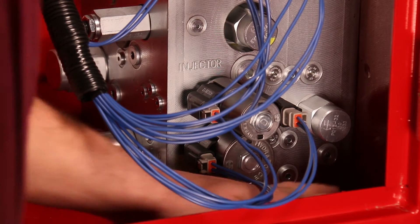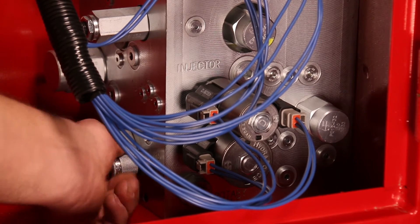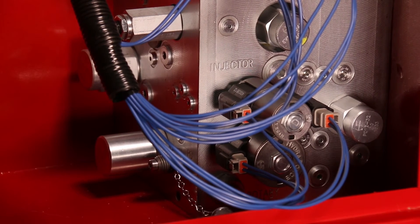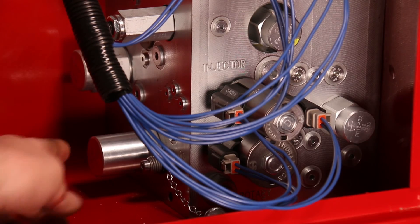This little guy down here is the pressure gauge adapter port. The pressure gauge is in the spare parts kit on the opposite side of the machine and it just threads on here.